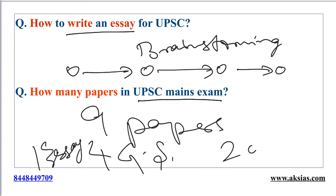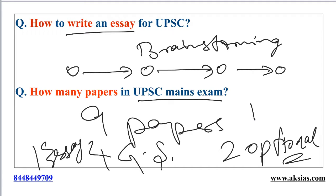And then you have two optional papers — that is, for one optional subject you will be having Paper 1 and Paper 2. So in all, you have nine papers in the mains examination.